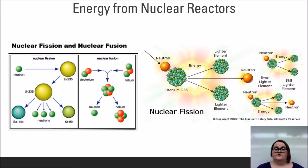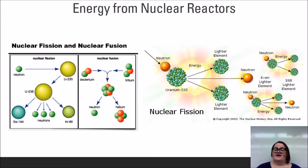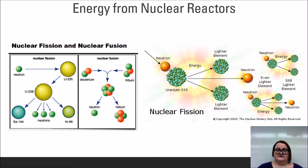Almost all nuclear reactors in the world use fission as their primary energy source. In this process, a high-energy neutron collides with uranium-235, a radioactive isotope capable of spontaneous expulsion of neutrons and formation of lighter elements. The addition of the high-energy neutron speeds up the process and can cause a chain reaction that produces large amounts of energy.